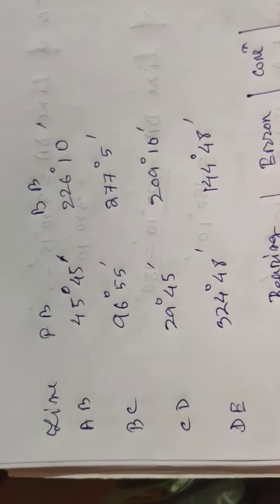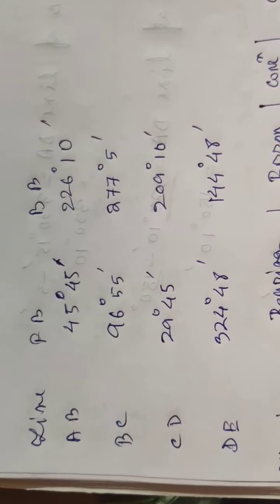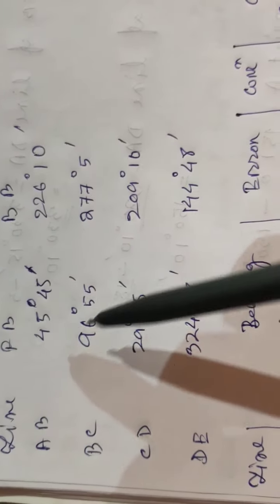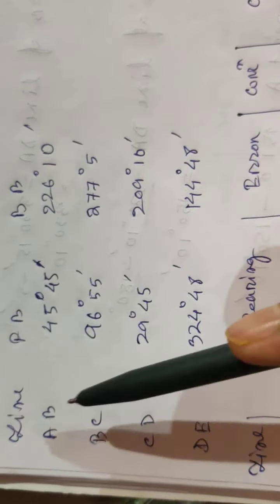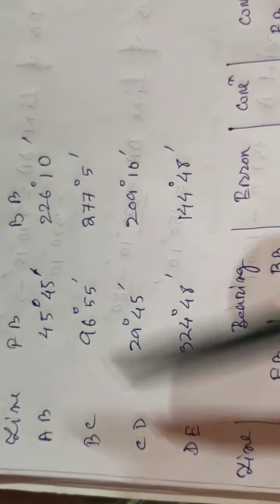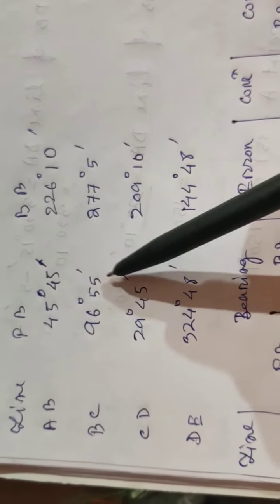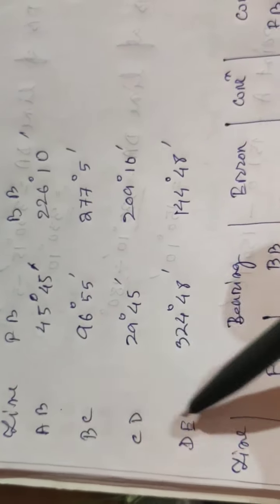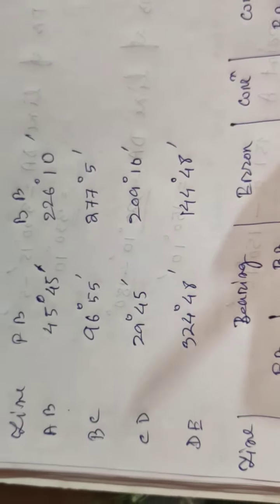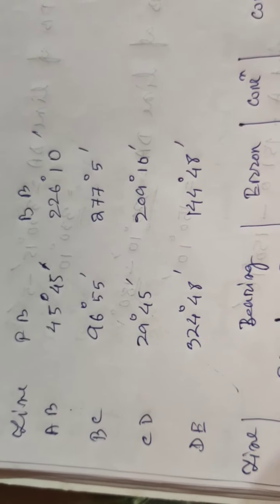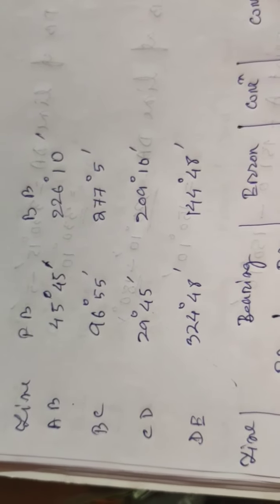We'll try to solve another problem of local attraction related to compass surveying. These are the data observed during a compass survey — these are the lines of the traverse and these are the observed bearings. You need to check whether there is any local attraction present in any of these lines, and if there is, we need to correct these bearings.